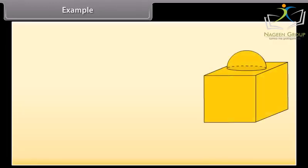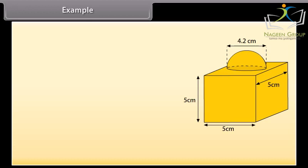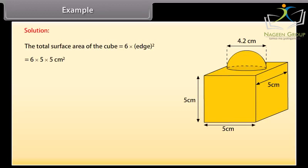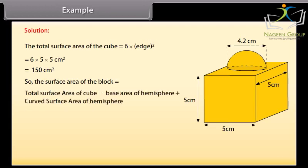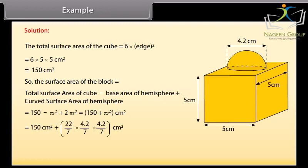Example: This decorative block is made of two solids — a cube and a hemisphere. The base is a cube with edge 5 cm and the hemisphere fixed on top has a diameter of 4.2 cm. Find the total surface area of the block. The total surface area of the cube = 6 × edge² = 6 × 25 = 150 cm². The surface area of the block equals total surface area of cube minus base area of hemisphere plus curved surface area of hemisphere, giving 163.86 cm².